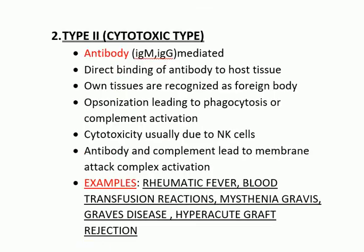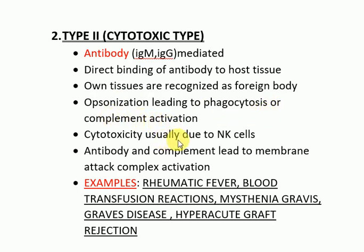Type 2 hypersensitivity reactions are also called cytotoxic reactions. They are antibody-mediated, involving IgM and IgG. There is direct binding of antibody to host tissue — tissues are recognized as foreign bodies and antibodies are produced against them, leading to opsonization and phagocytosis or complement activation, usually involving natural killer cells.